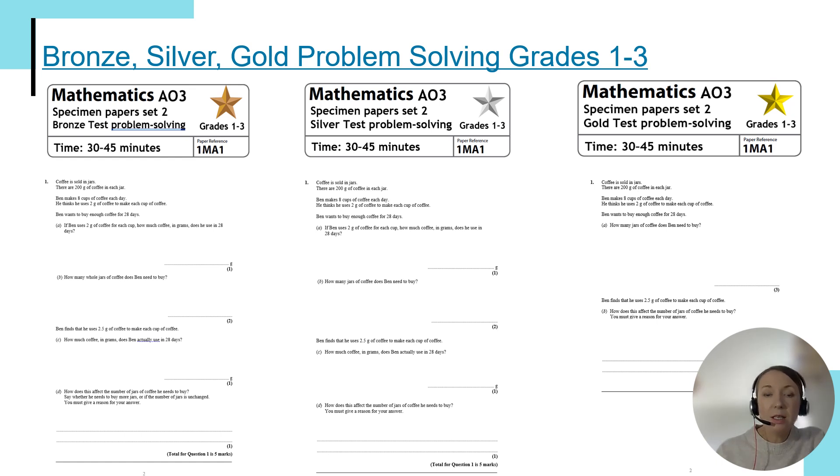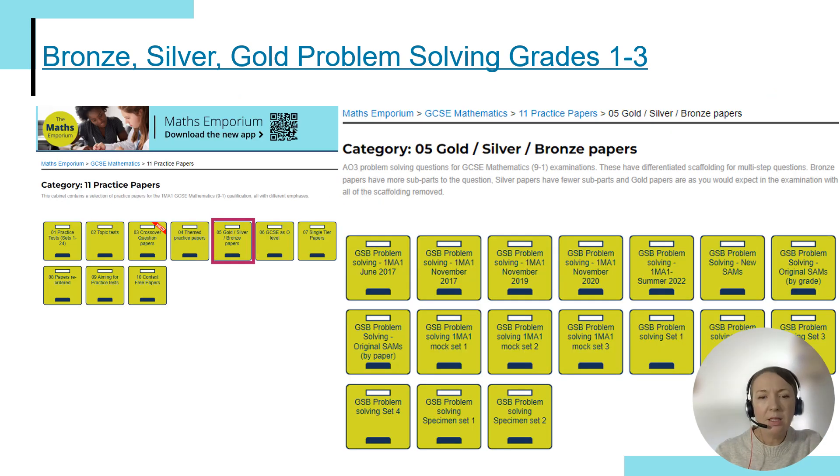Supporting students in accessing that AO3 problem solving is really essential to support progress towards grade 3. That's why I'd recommend our bronze silver gold problem solving papers that you can see on screen here. These are available by topic. You can see the example here for the fractions and percentages topic. The bronze papers include significant scaffolding, slightly reduced in our silver papers working up towards the gold, which is as the paper question would appear in a live series. These can be found within the practice paper section of the maths emporium.